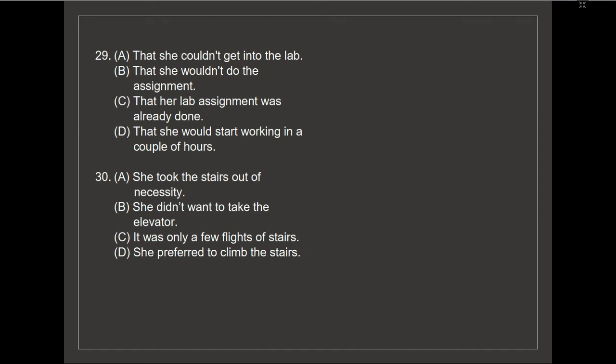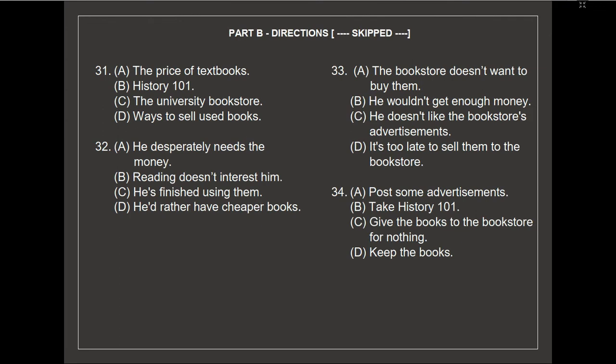Go on to the next page. Now read along with me as I read the directions for Part B. Remember, you should not read ahead or turn the pages while the directions for this part are being read. Part B. In this part of the test, you will hear longer conversations. After each conversation, you will hear several questions. The conversations and questions will not be repeated. After you hear a question, read the four possible answers in your test book and choose the best answer. Then, on your answer sheet, find the number of the question and fill in the space that corresponds to the letter of the answer you have chosen. Remember, you are not allowed to take notes or write in your test book.